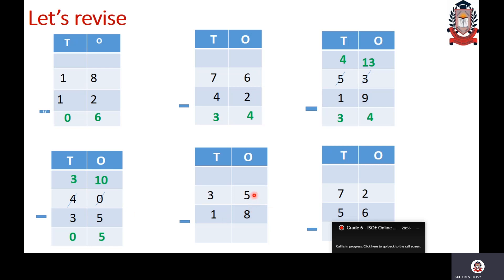Now: 35 minus 18. Check the digit in ones place: 5 and 8. More on bottom, so I have to borrow. From 3 tens I borrow 1 ten, so 3 tens becomes 2 tens, and 5 ones plus 1 ten gives 15. Now 15 minus 8: count backwards — 14, 13, 12, 11, 10, 9, 8, 7. So 15 minus 8 equals 7. Then 2 tens minus 1 gives 1. The answer is 17.